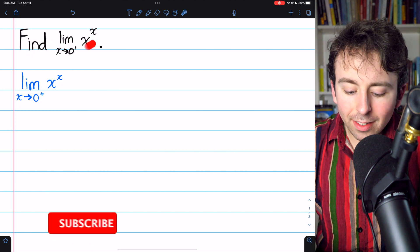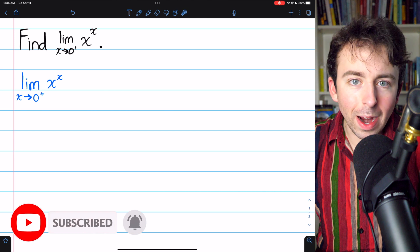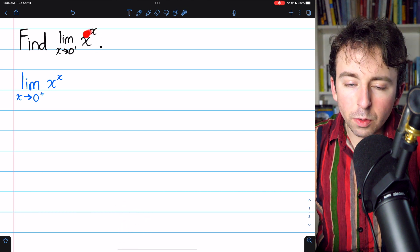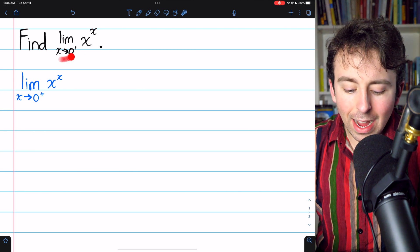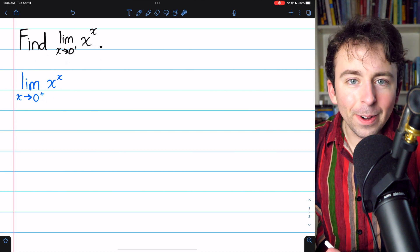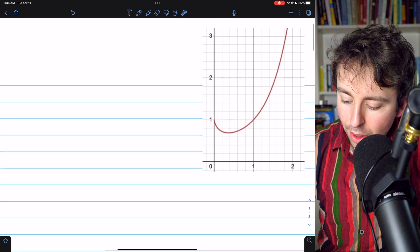We're going to find the limit of x to the power of x as x approaches 0 from the positive direction. From the negative direction, this is a complex valued function, and we want to restrict our discussion to real numbers, so we have x approaching 0 from the right. We'll start working it out down here. The function x to the x, by the way, looks like this.